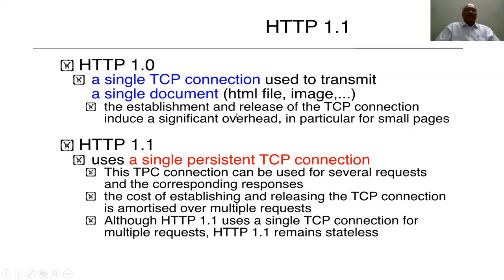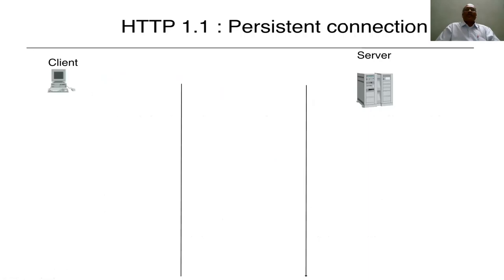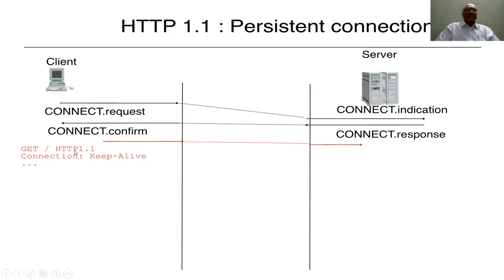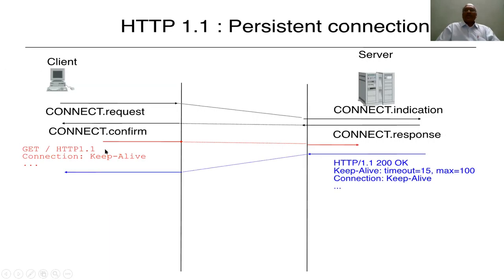HTTP 1.0 is considered overhead compared to the later version. HTTP 1.1 is a single persistent TCP connection, meaning once the connection is established you can have several requests and data exchanges between client and server. The TCP connection is used for several requests and corresponding responses are maintained. With HTTP 1.1, a request comes from the client, the server receives it, the server gives a response, and the client gets confirmation. Then a data request is initiated — for example, requesting an HTML page using HTTP 1.1.